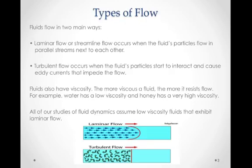So there are two main ways that fluids flow. There's laminar flow, sometimes called streamlined flow, and this occurs when a fluid's particles flow in parallel streams next to each other, kind of like this illustration shows here. The molecules are moving parallel to one another in these streams. That's laminar flow, when things are flowing nice and easily.